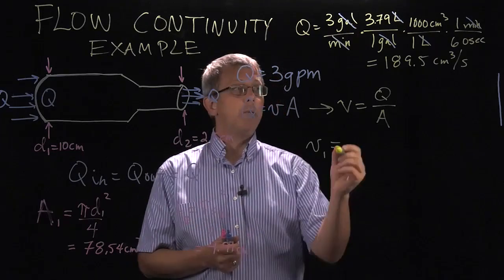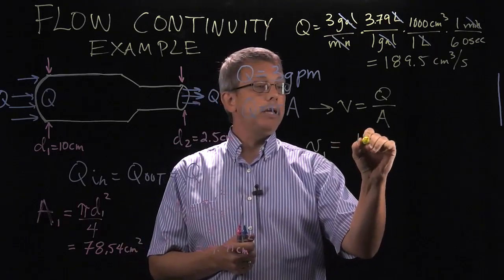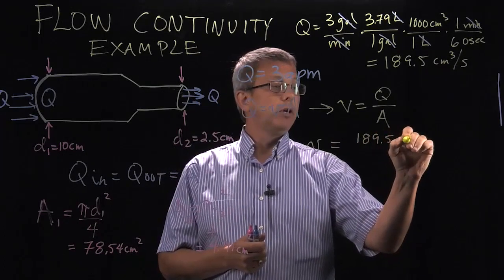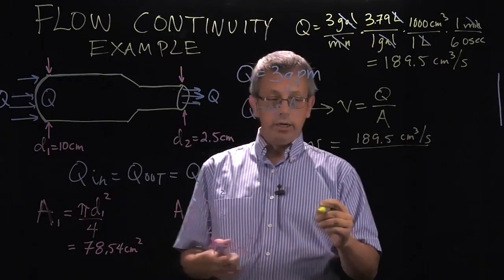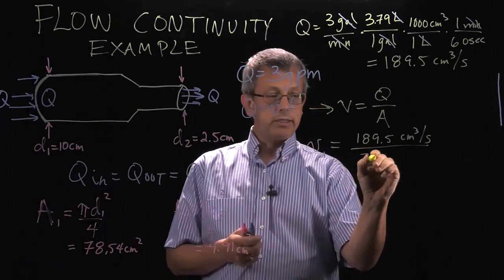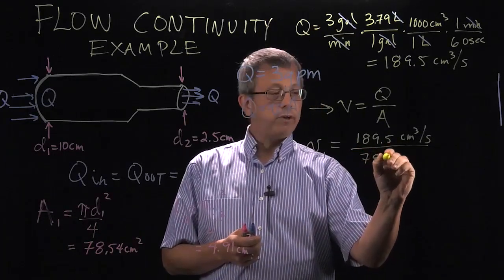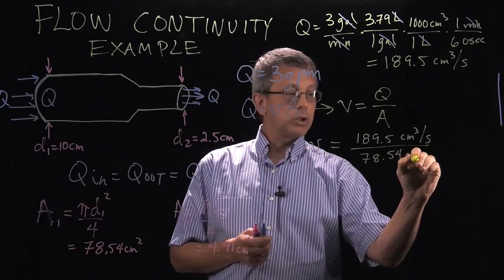So now I plug that value in, 189.5 cubic centimeters per second. I divide it by A1 here, which is the 78.54 square centimeters.